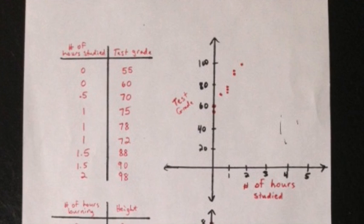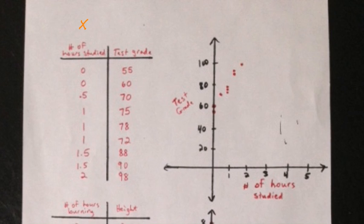In this first example, we're comparing the number of hours studied for an exam by a group of students to the resulting test grades. The first step in determining whether or not there's a relationship between these two sets of data is to plot these points on the coordinate plane, in the same way that we would plot any group of ordered pairs, with the number of hours studied being our x coordinate and our test grade being our y coordinate.